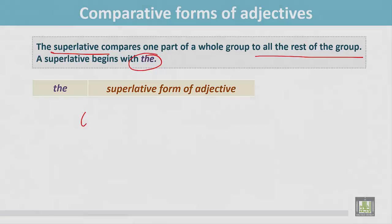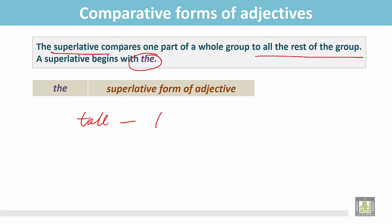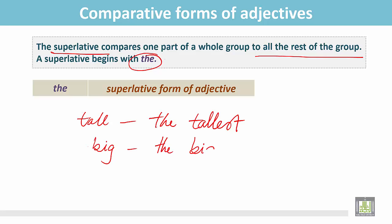For adjectives like 'tall,' the superlative form is 'the tallest.' For adjectives like 'big,' the superlative form is 'the biggest.'